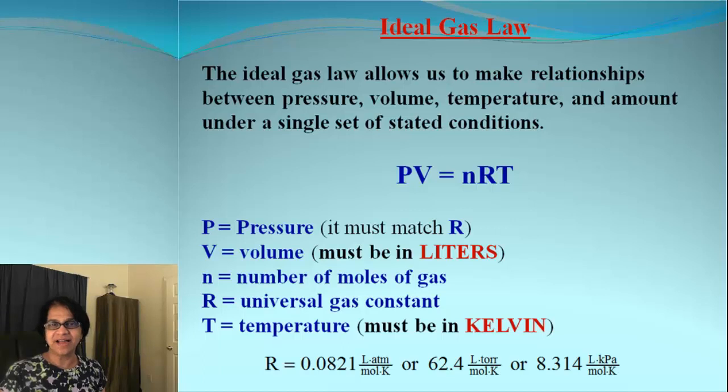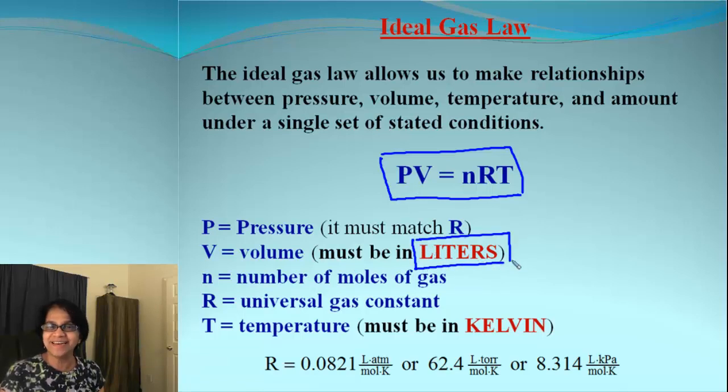What exactly is Ideal Gas Law? The simple formula for Ideal Gas Law is PV equals nRT. What does each of the term mean? P stands for pressure. V stands for volume. Look carefully. The volume must be in liters.